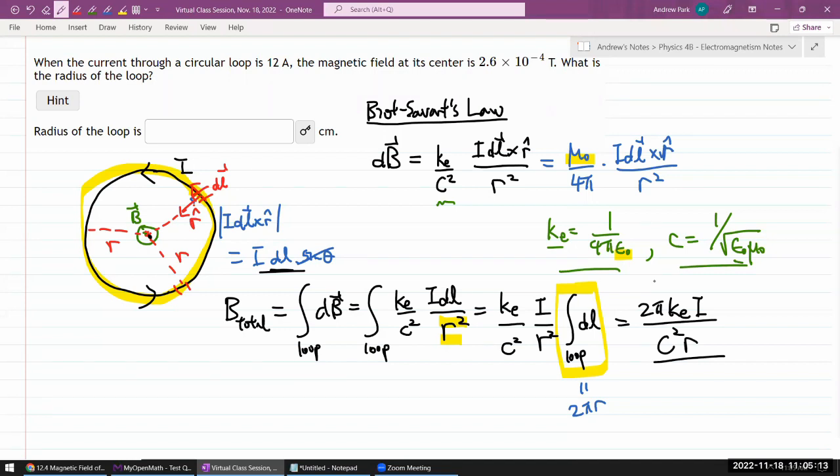And I'm looking for the radius of the loop, so I can do that quickly. Solving it for R, I get radius of the loop. It's 2 pi Coulomb constant I over C squared times magnetic field.